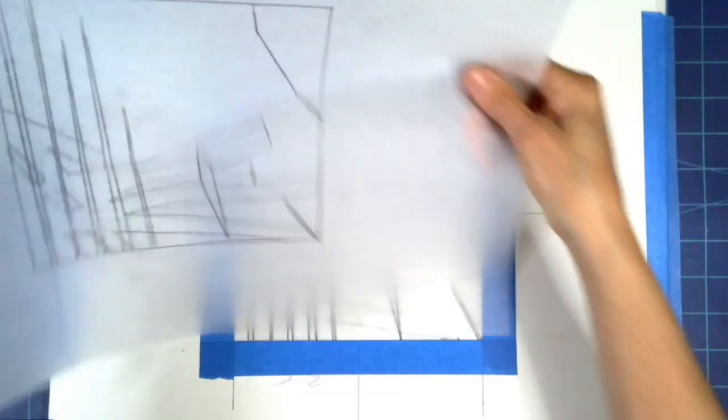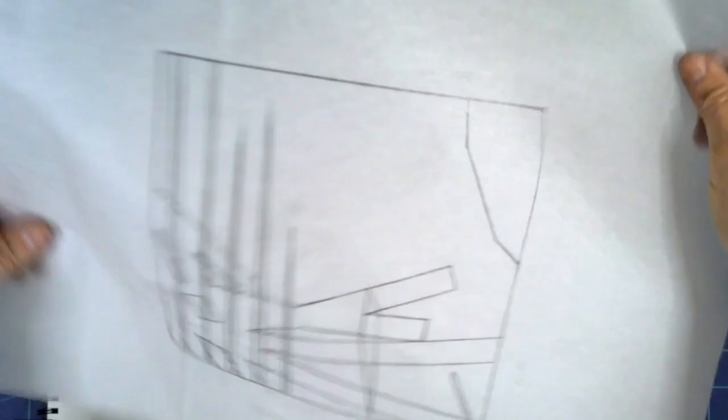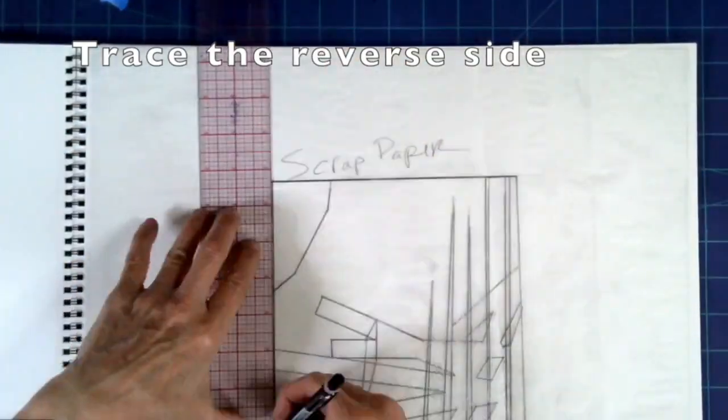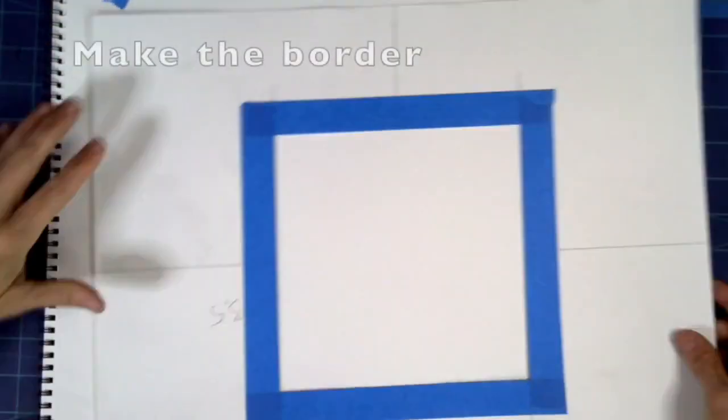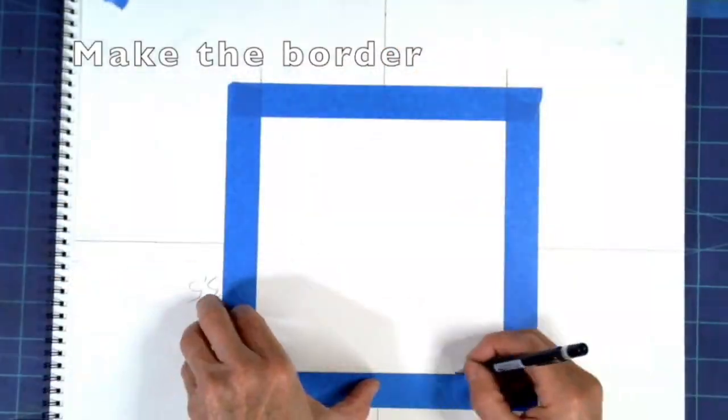I need to turn that tracing paper over and trace the back side so that there's graphite on both sides of that tracing paper. Then I'm going to put the template on a clean sheet of paper and trace the template window to make a register.